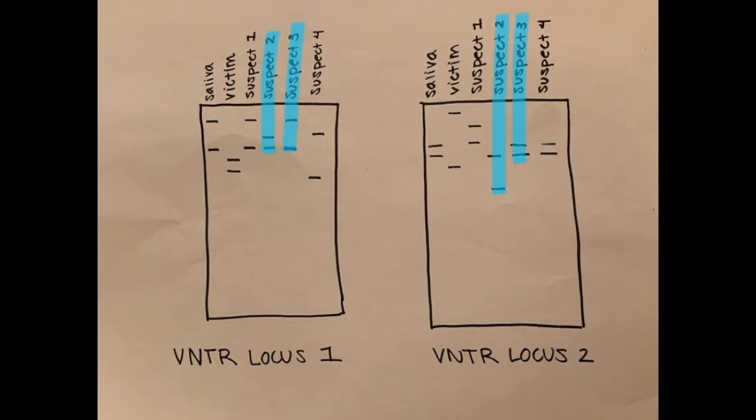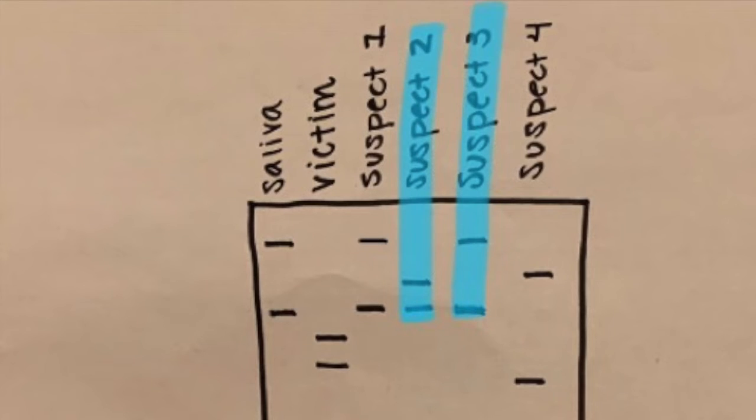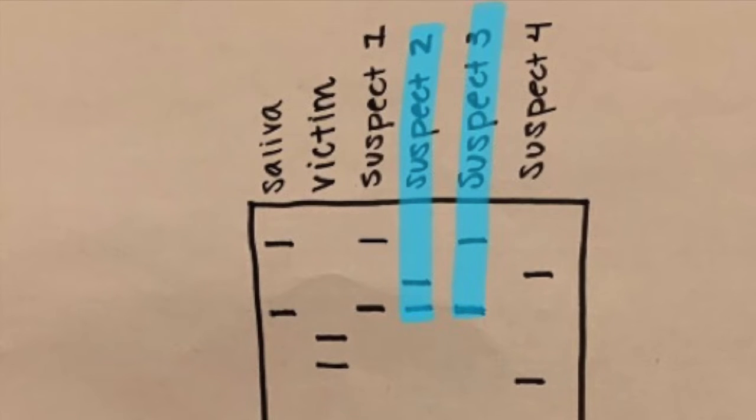As we know, Roxy is Suspect 2 and Indiana Bones is Suspect 3. If we first look at loci 1, you can see that they both have the same bottom band. To be a parent, you must have at least one band in common at both loci.